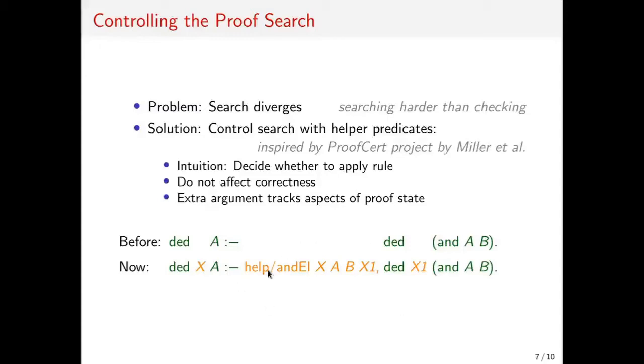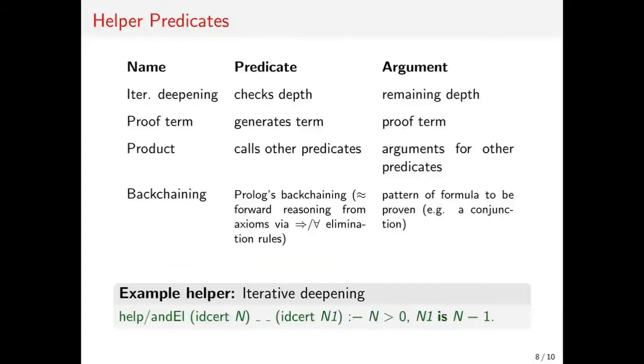The question is now what these helper predicates should look like and what kind of helper predicates we can generate automatically and as logic-independently as possible. Here you can see some of the helper predicates that we generate. The first one is probably the most obvious one, where we try to use iterative deepening search. Here the argument would simply keep track of the search depth and the predicate just checks for the depth. Apart from restricting the search, we can also keep track of it to generate proof terms, so then the argument would be the resulting proof term.